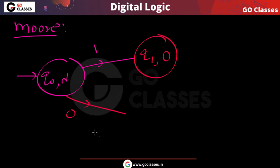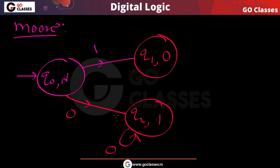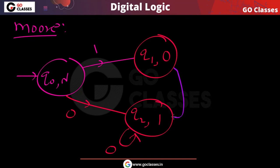If the first symbol is 0, you print 1. If any number of 0s are coming, then print 1. The first 1 that comes, you print 0 for that. And in the next state, everything is kept as it is.